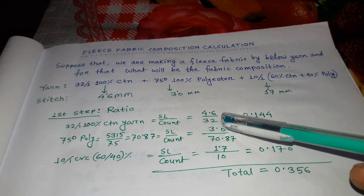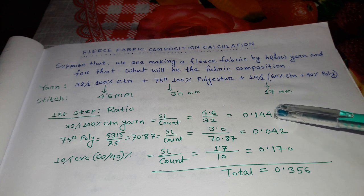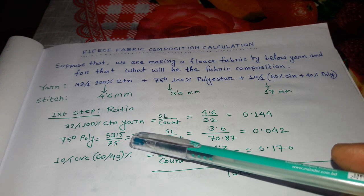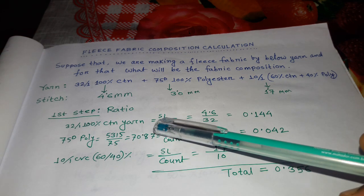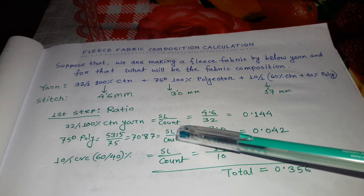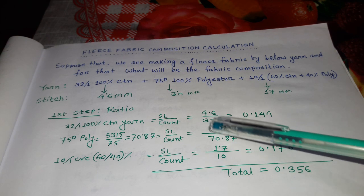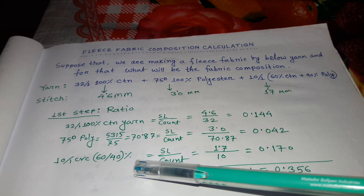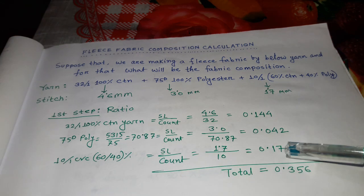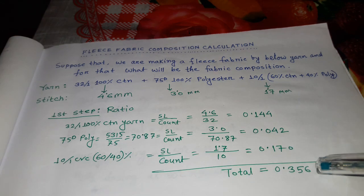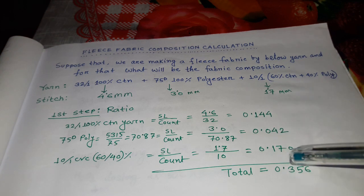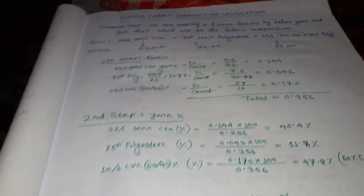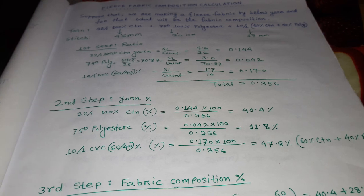For 32 single cotton: 4.6 divided by 32 equals 0.144. For 75 denier polyester, I convert it to cotton count — it comes to 70.8 single — so 1000/3 divided by 70.8 equals 0.042. For 10 single CVC 60/40: stitch length divided by count gives 0.170. Adding all three ratios: 0.144 + 0.042 + 0.170 = 0.356.